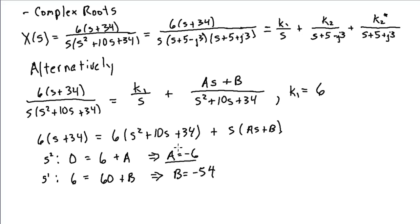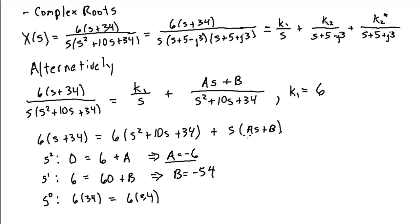I've found all terms in the partial fraction expansion: K1, A, and B. I can check using the constant terms on both sides. On the left-hand side I have 6 times 34, and on the right-hand side I also get 6 times 34, since there is no constant term in AS squared plus BS. This just reduces to a check on my arithmetic. I could have also used this method to find K1 directly, but it was easier using the cover-up method.